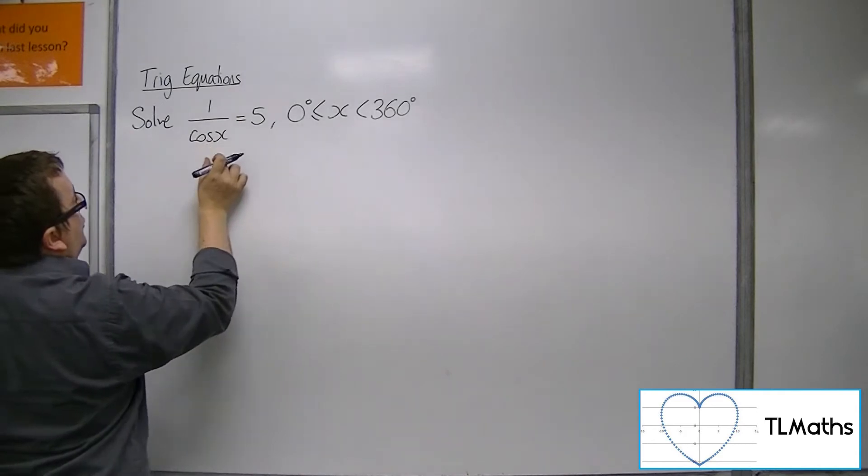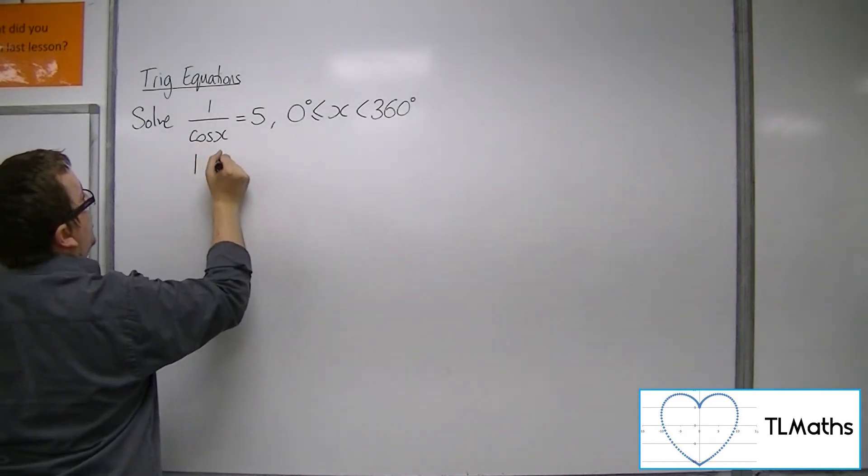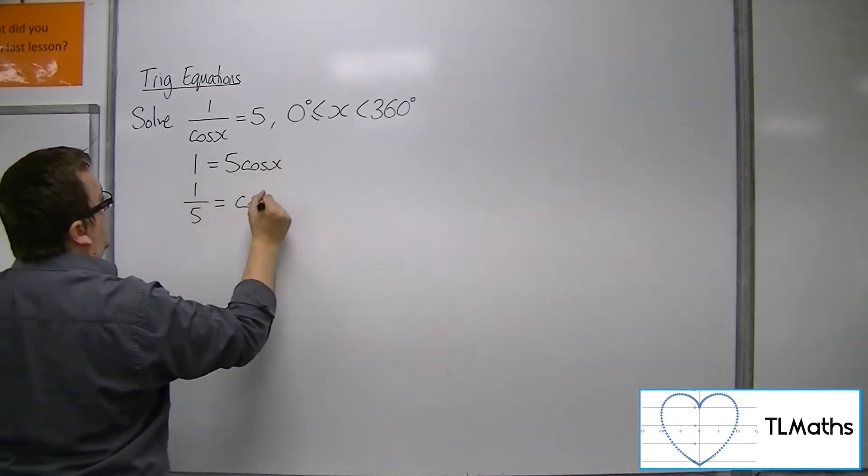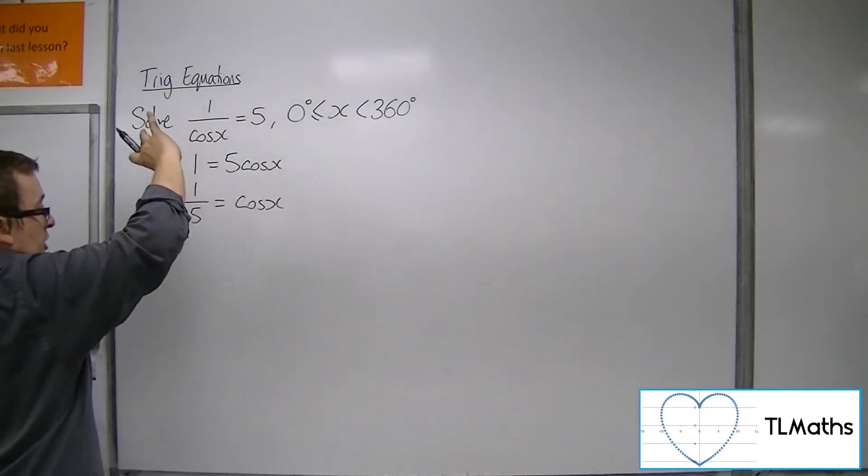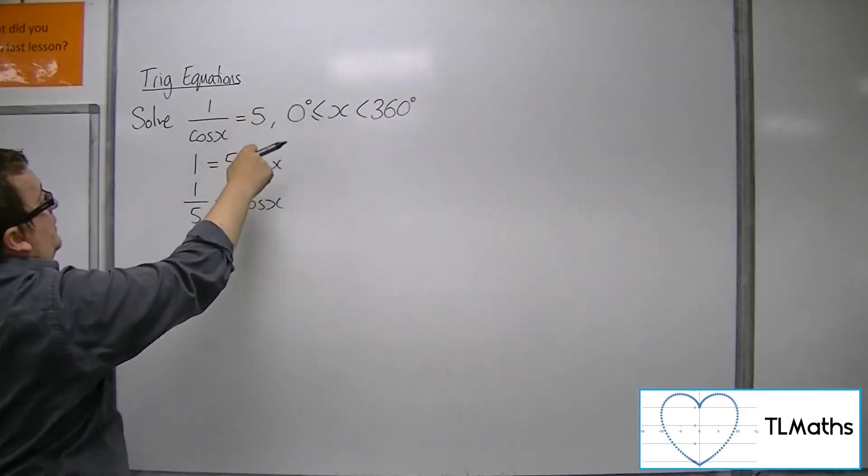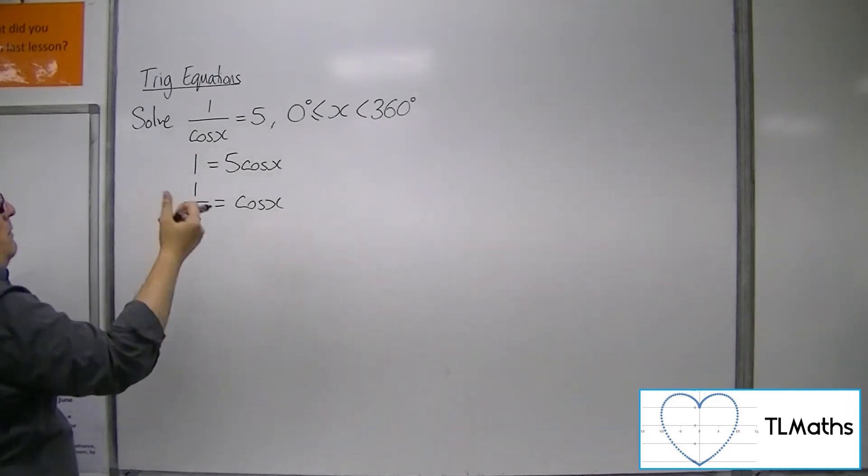What you're doing here is you're effectively going to multiply both sides of the equation by cos x, and then divide both sides by 5. You could have gone directly from that line to that line just by using the reciprocal of both sides. So 1 over that side must be the same as 1 over that side, and so cos x must be equal to 1 fifth. That's the equation we're actually going to solve here.